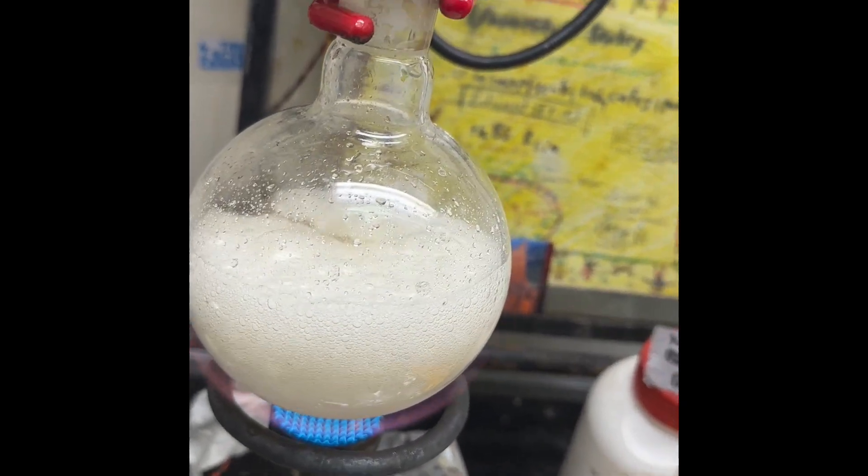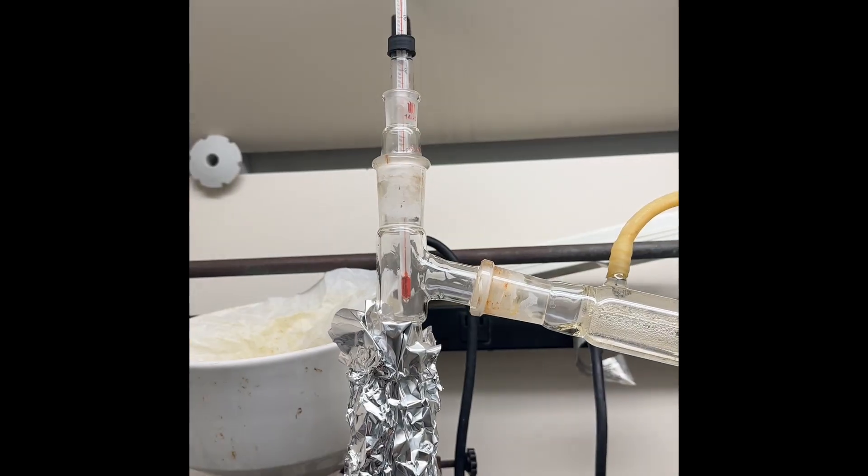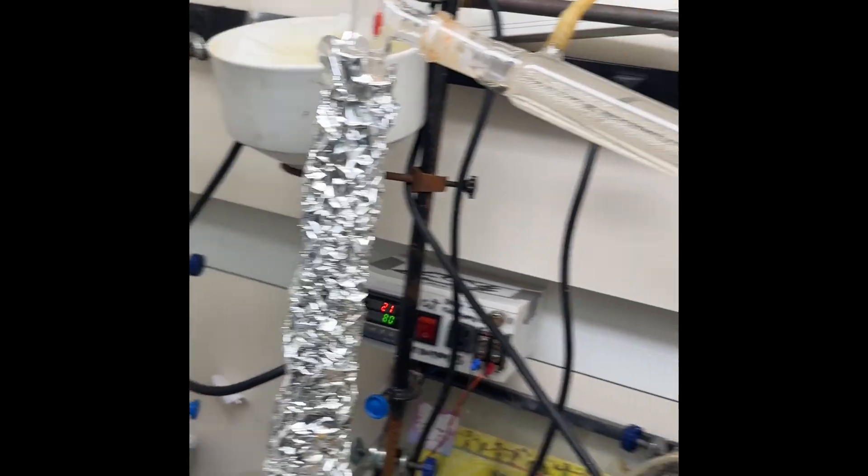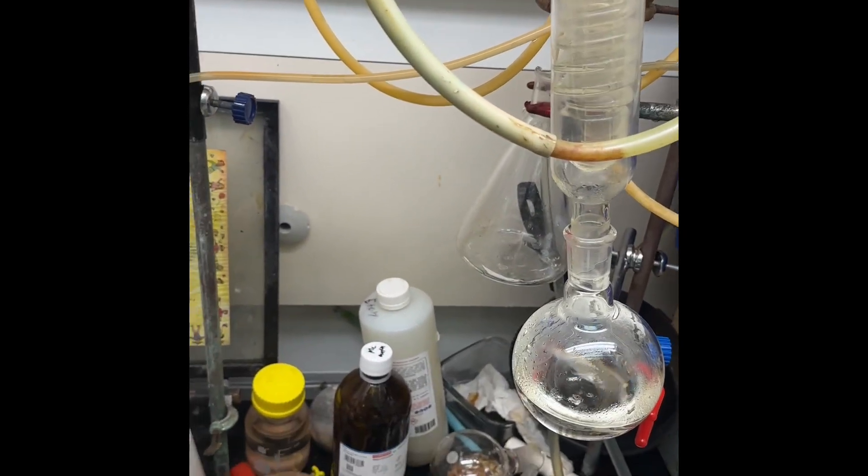You can see some white fuming, so that's traces of sulfuric acid making it over. Obviously slight excess of acid, so we stop heating and we wait for that to stop dripping.